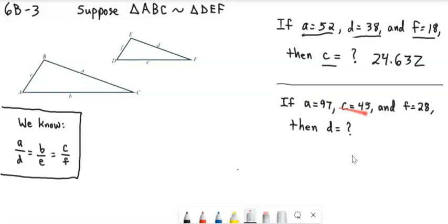It says, suppose A is 97, C is 45, and F is 28. Well, let's put those in on the triangles over here. A is 97, C is 45, and F is 28. And we want to know, what is D? Well, we're going to set up the same fraction.